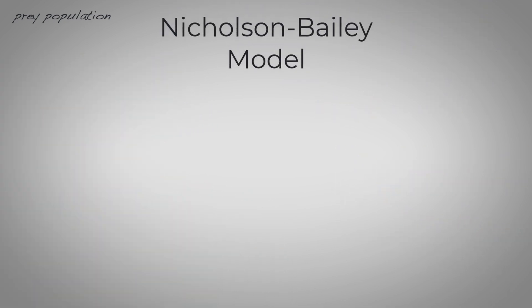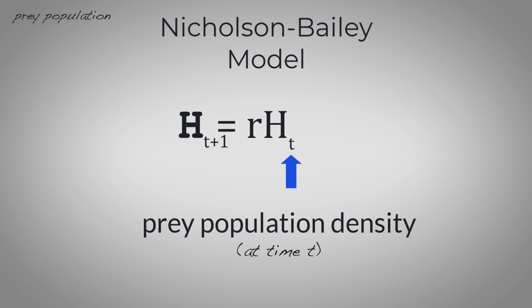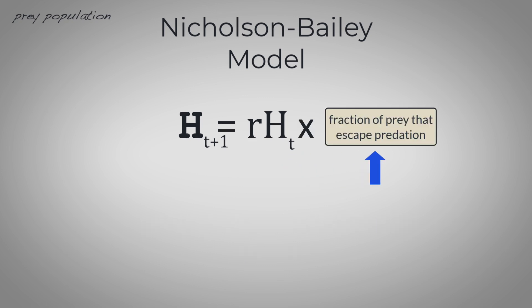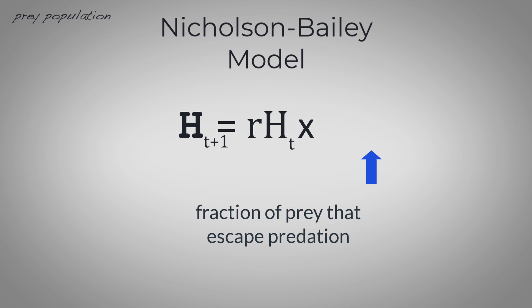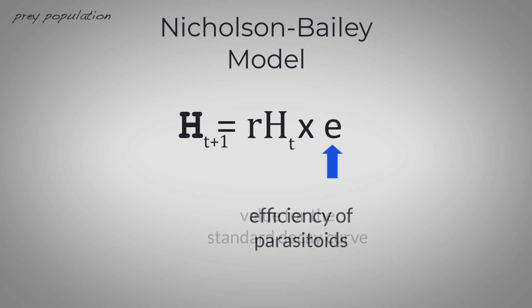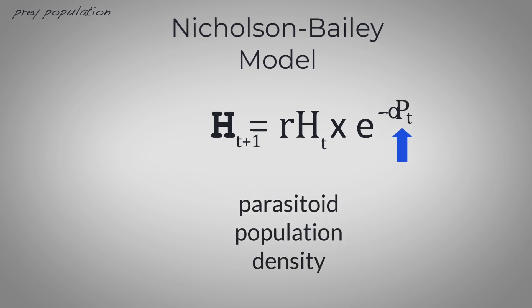So the prey population density at time t plus one is equivalent to the prey growth rate multiplied by the prey population density at time t multiplied by the fraction of these prey that can escape predation. That's calculated based on the value of a standard decay curve relative to the efficiency of parasitoids in finding a host and the parasitoid density. When it comes to the parasitoid population density,